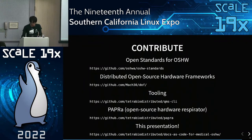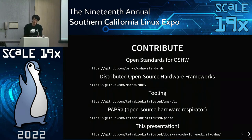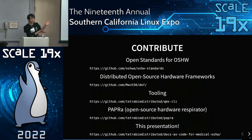One of TetraBio's flagship projects is the PAPRA — an open source hardware respirator that you can source and build yourself for under $150. You can check out the PAPRA repo. This presentation itself is also published using a Docs as Code approach, so if you want to improve this very presentation, you can go to the repo.